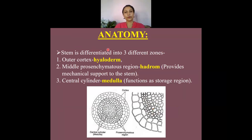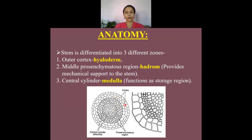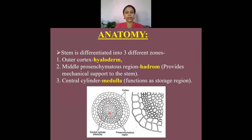Moving to the anatomy, the stem or main axis is differentiated into three regions: the outermost layer called the hyaloderm, which provides mechanical strength; a middle cortex region; and the central region called the medulla, which functions as a storage region for the plant body of Sphagnum.